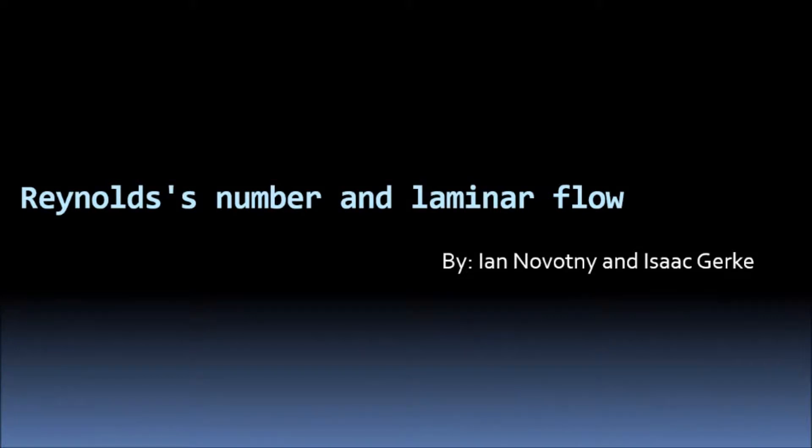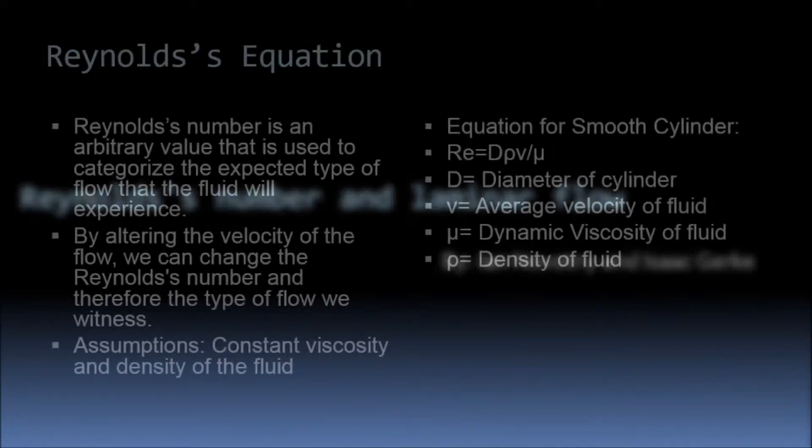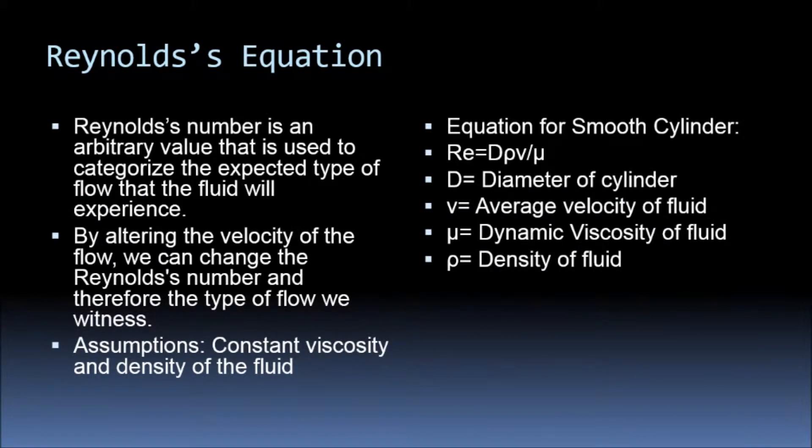Reynolds number and laminar flow. Reynolds number is an arbitrary value which can predict the nature of fluid flow, either laminar or turbulent. By altering the velocity of the fluid, it is possible to change the type of flow.